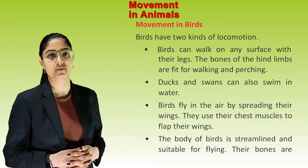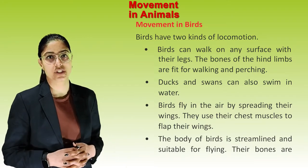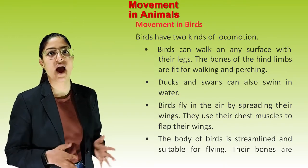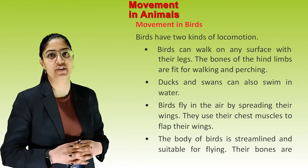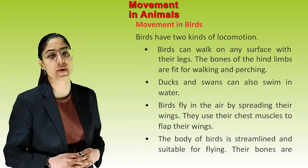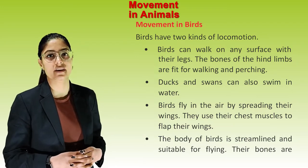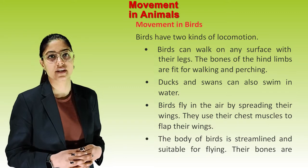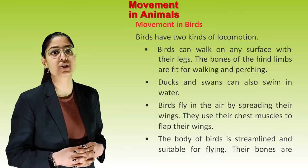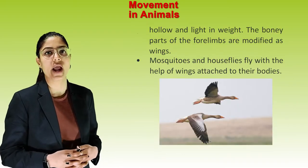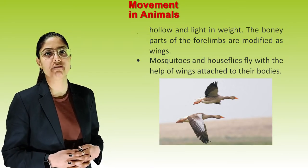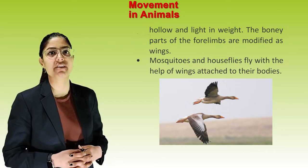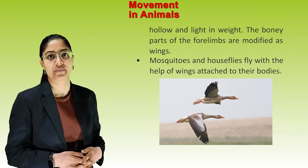Movement in birds. Birds have two kinds of locomotion. They can walk on any surface with their legs; the bones of the hind limbs are adapted for walking and perching. Ducks and swans can also swim in water. Birds fly in the air by spreading their wings and using their chest muscles to flap them. The body of birds is streamlined and suitable for flying; their bones are hollow and light in weight. The bony parts of the forelimbs are modified as wings. Mosquitoes and house flies also fly with the help of wings attached to their body.